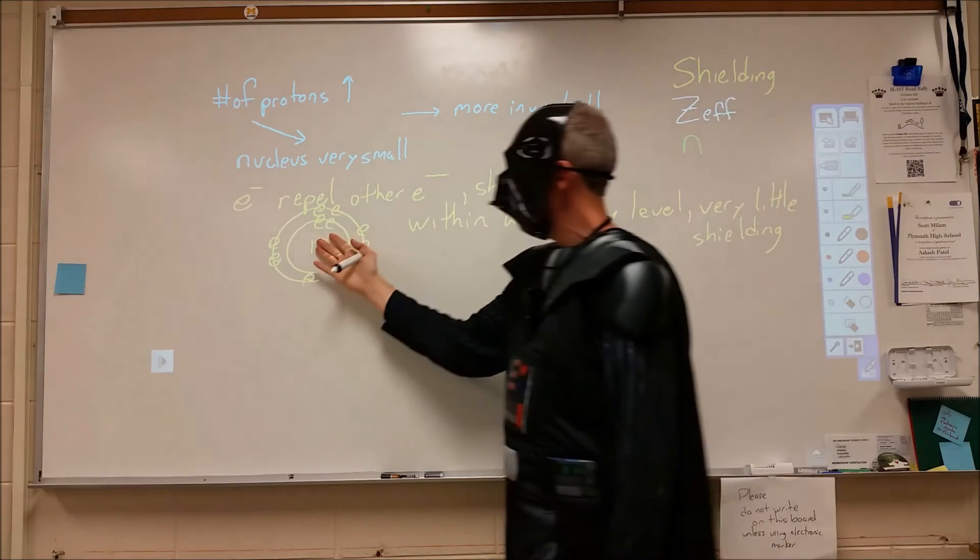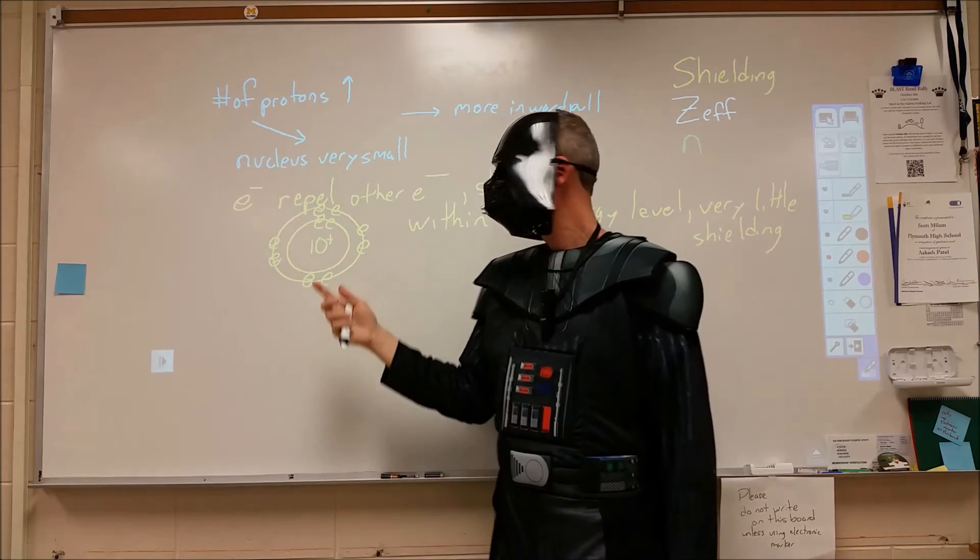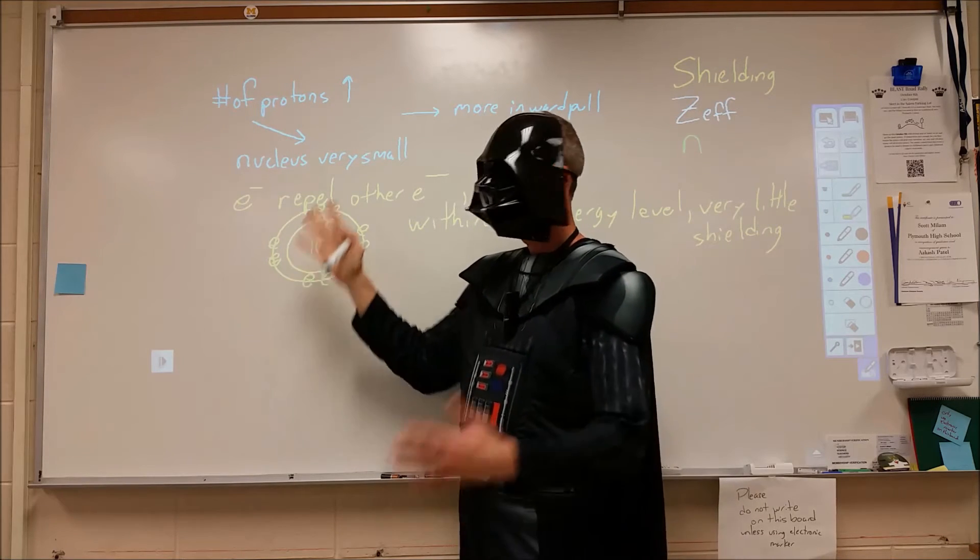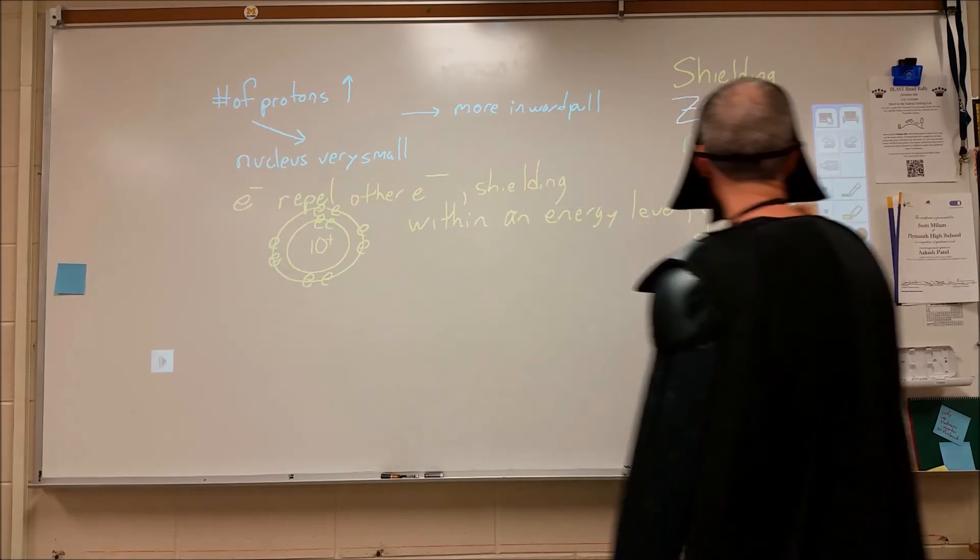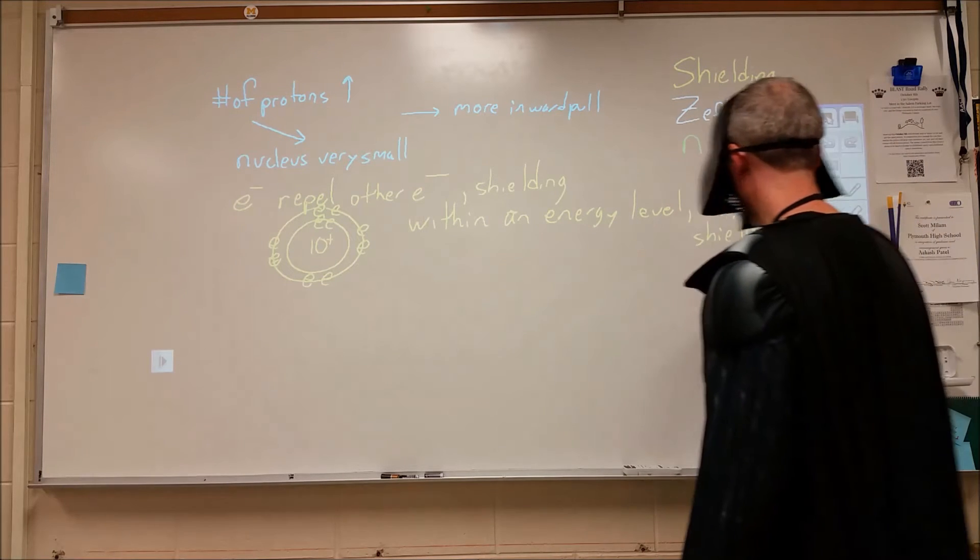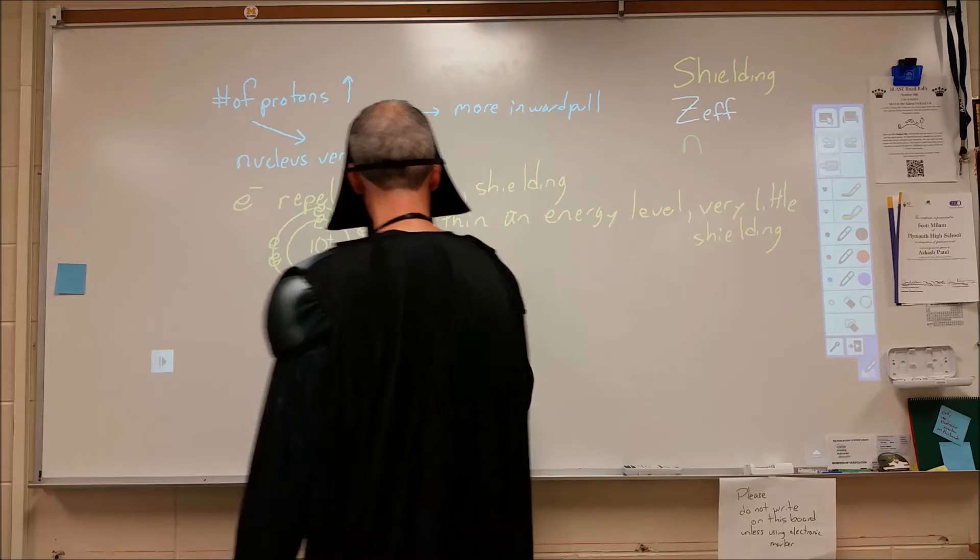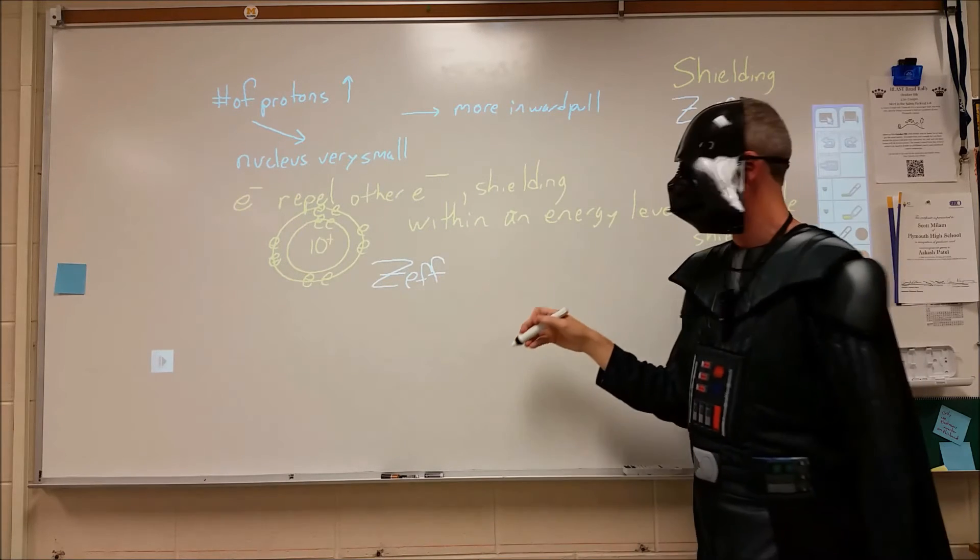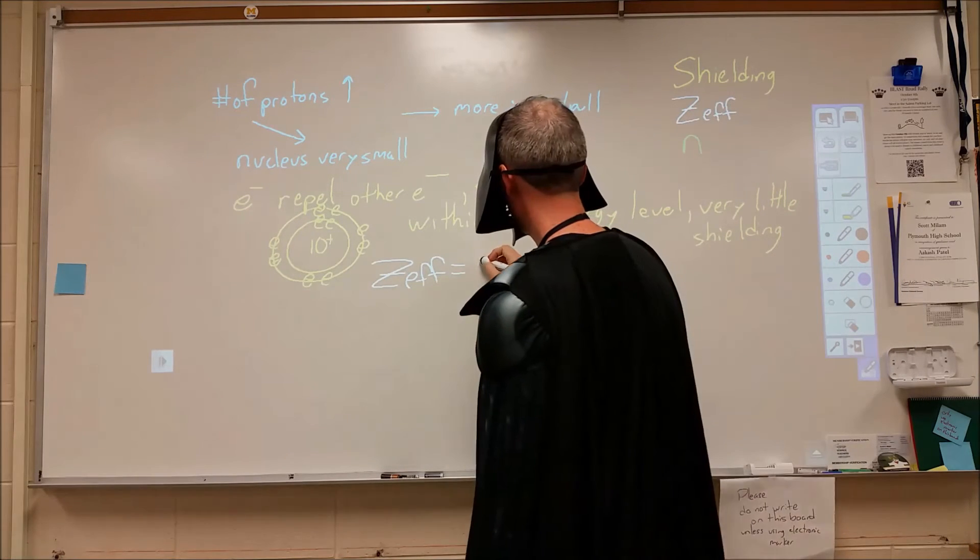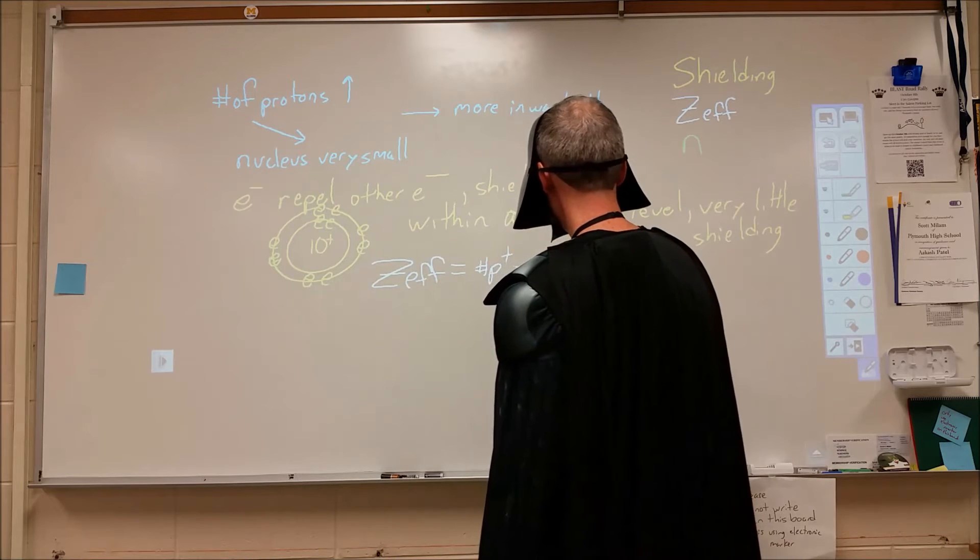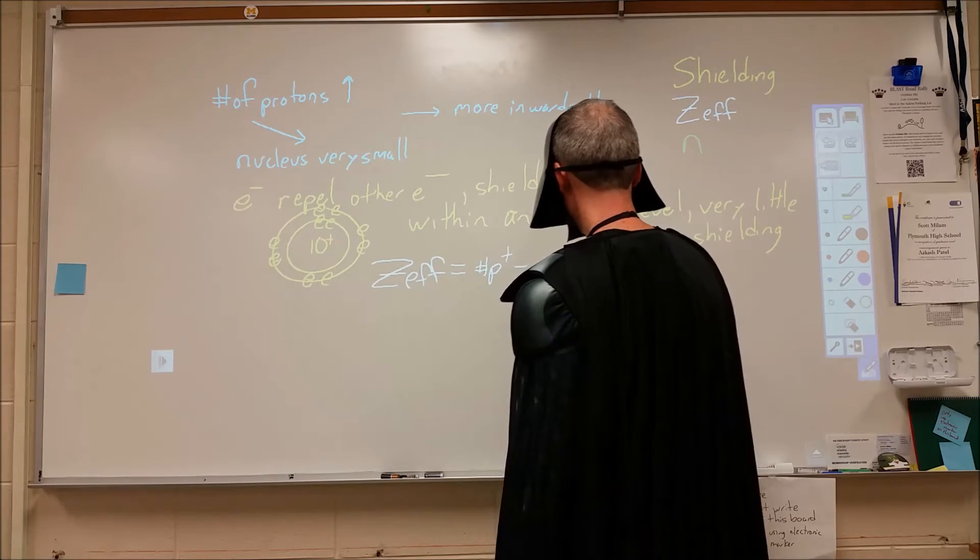So we have protons here in the center pulling electrons in. We have electrons here in the core pushing electrons out. So what we do is we combine the two into a single term. And that term is effective nuclear charge, which is written as Z effective. So the effective nuclear charge is equal to the number of protons minus the number of shielding electrons.